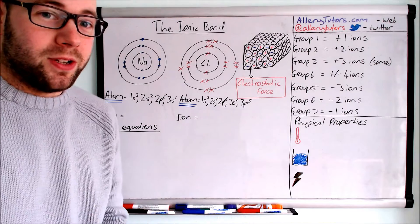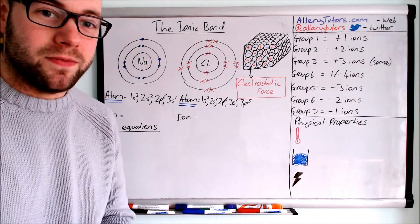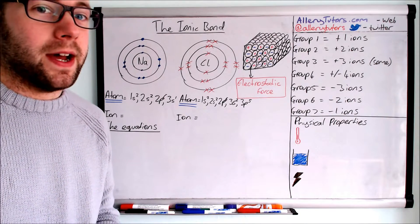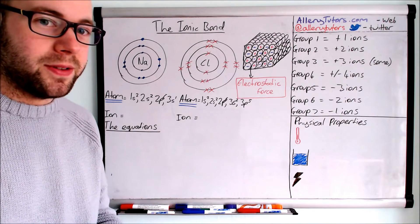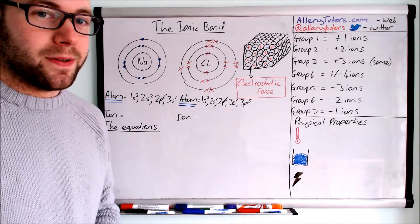In this video we're going to look at the ionic bond and the dot cross diagrams involved, as well as electron configurations of atoms and ions. The crucial equations as well—we have to go through them, half equations and ionic equations, and also go through the physical properties.